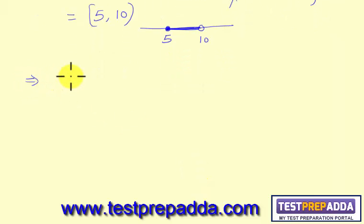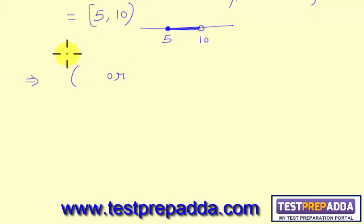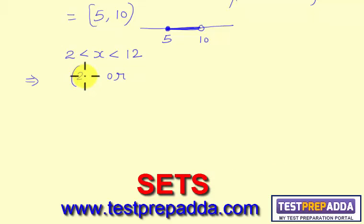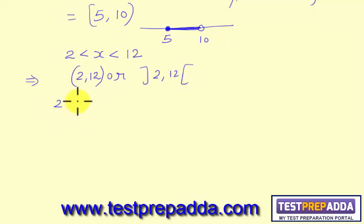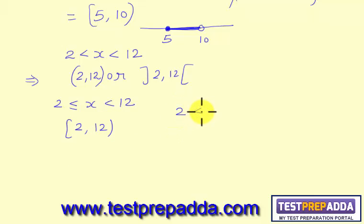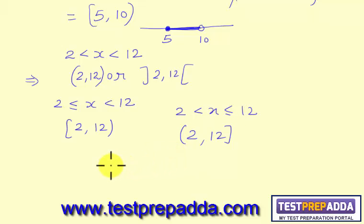So this is how we write different intervals. For an open interval we use the open bracket. For example, if it is 2 < X < 12, we write open interval 2 to 12 open interval. If it is 2 ≤ X < 12, we write closed interval 2 to 12 open interval. And if it is 2 < X ≤ 12, we write open interval 2 to 12 closed interval. Got the idea?